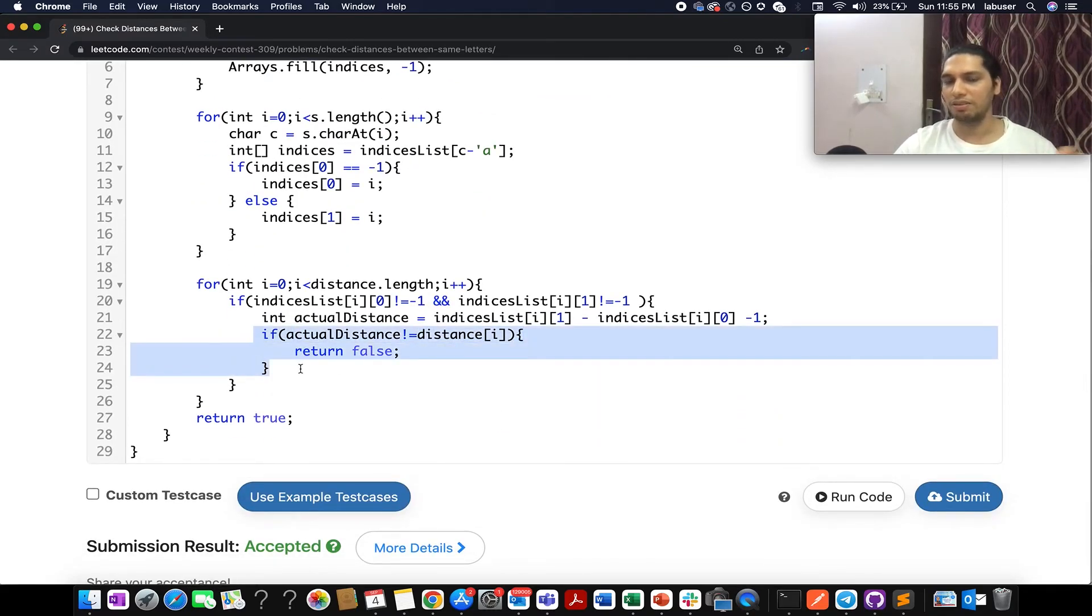And in case my actual distance is not equal to the expected distance value, what do I do? I return false. And in case line 22 is never true, that means we have to return true in those cases. So let's proceed ahead and submit the answer. Accepted.